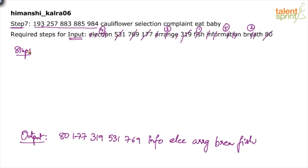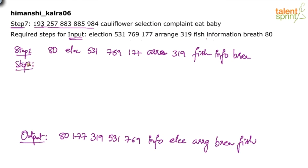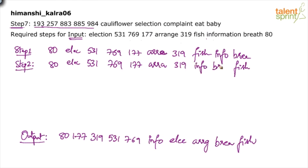Now do the step-by-step process. In step one, bring 80 to the first position — 80 was in the last position — and copy everything else as is: election, 531, 769, 177, arrange, 319, fish, info, bread. In step two, fix the word: bring fish to the last position, copying everything else — election, 531, 769, 177, arrange, 319, info, bread.